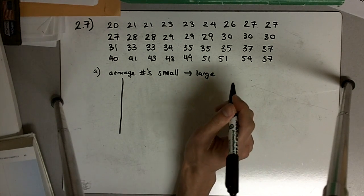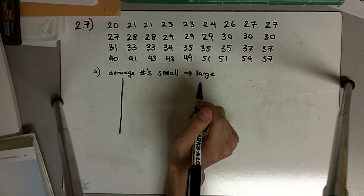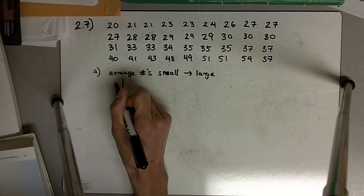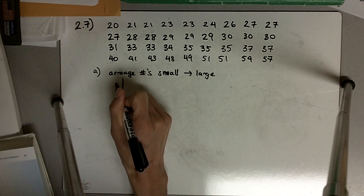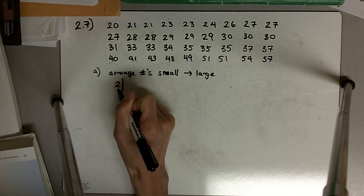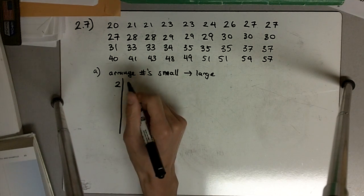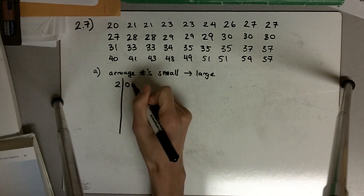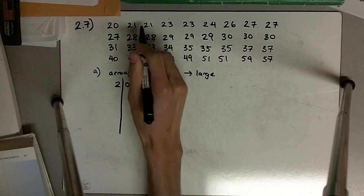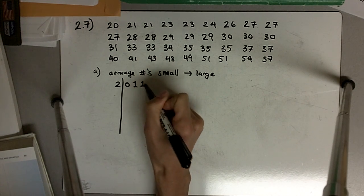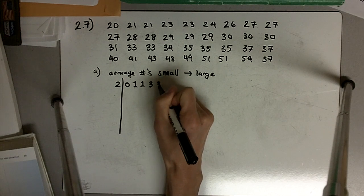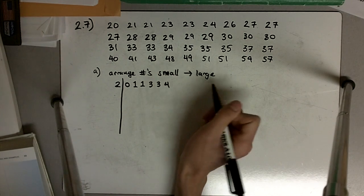So I'm going to write 2 here, and this will cover the range 20 through 24. So the 20 goes there. Each measurement creates a leaf, so I've got two 21s, a 23, a 23, and a 24.